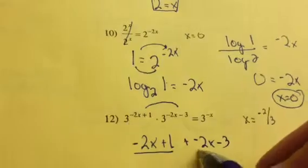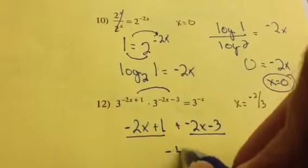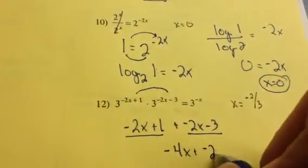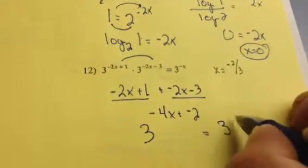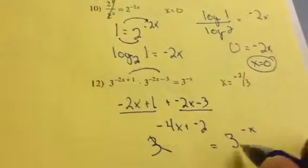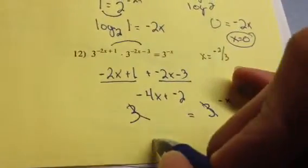So I'm just writing the exponents up here. So here's the first exponent with the other exponent. That's going to give me negative 4x plus negative 2 as my new exponent of 3. And now that the bases are the same, I can ignore them and just focus on the exponents.